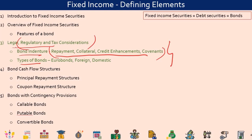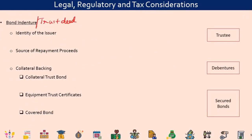We will discuss each of these in detail, including the basic legal, regulatory, and tax considerations. Issuers can issue certain types of bonds — these can be Eurobonds, foreign bonds, and domestic bonds. A bond is a contractual agreement between the issuer and the bondholder, and the legal document for this is called the bond indenture or the trust deed. This is the legal contract that describes all aspects of a bond — what is the form of the bond, the obligations of the issuer, and the rights of the bondholder.